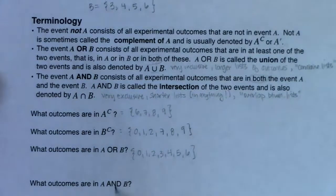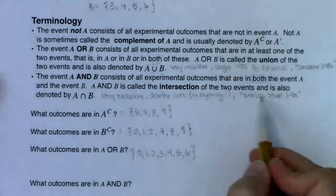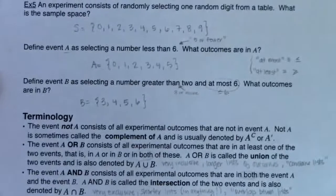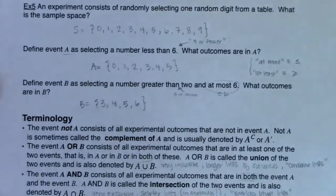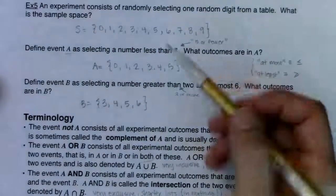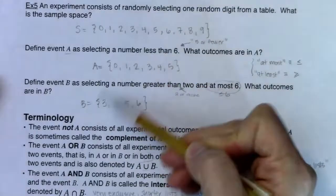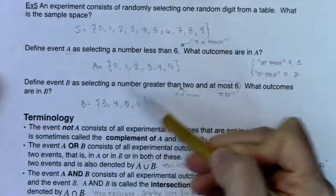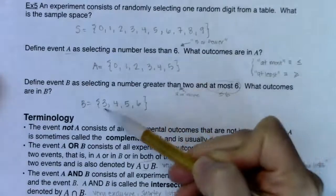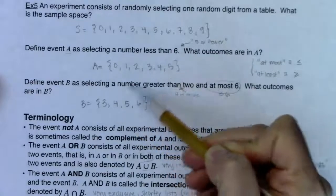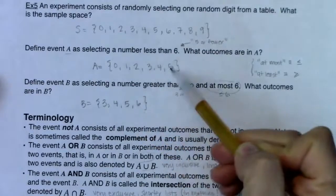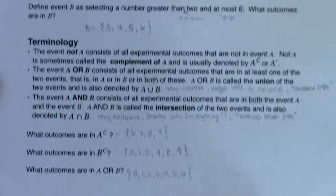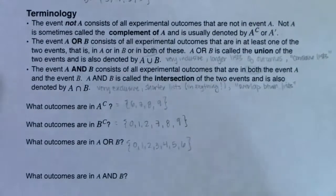The AND is different — I want to find the overlap, if there is any. Looking at A and B: zero wasn't in both, one wasn't in both, two wasn't in both, but three was in both, four was in both, five was in both. Six is not in both, so it doesn't make it into the AND. The intersection A and B is {3, 4, 5}.